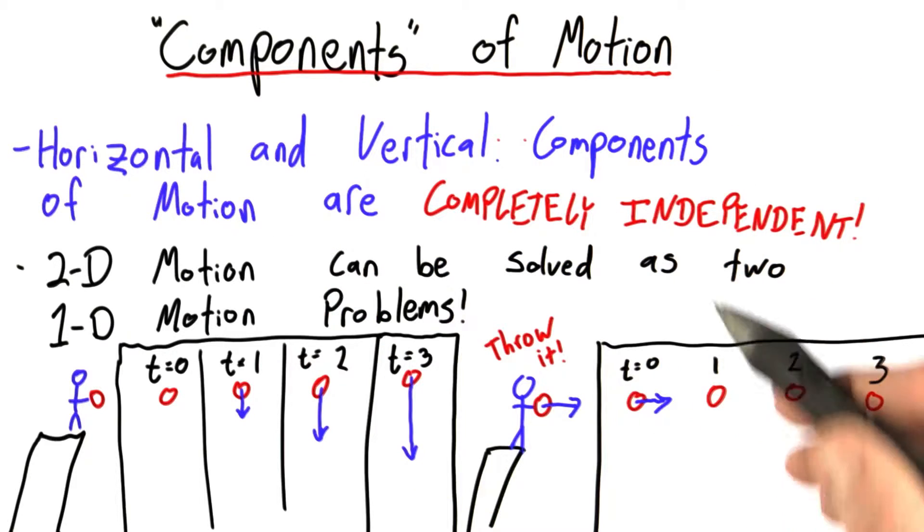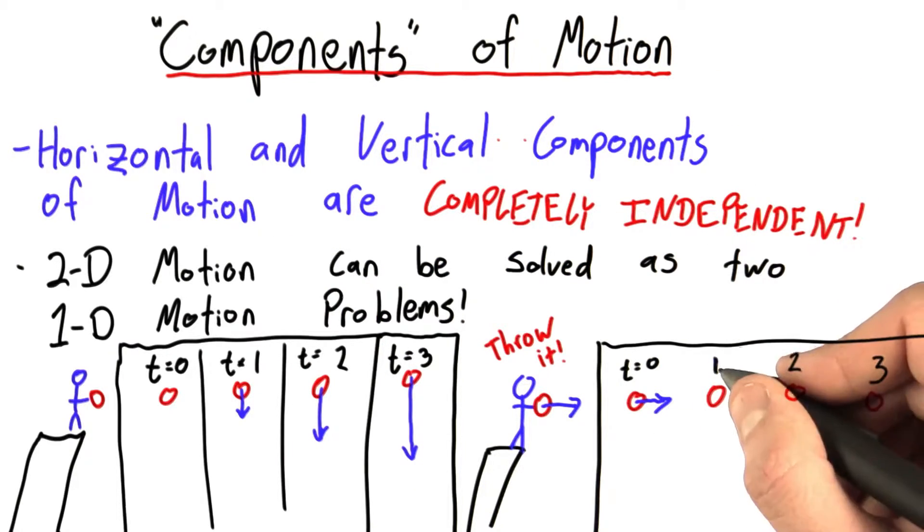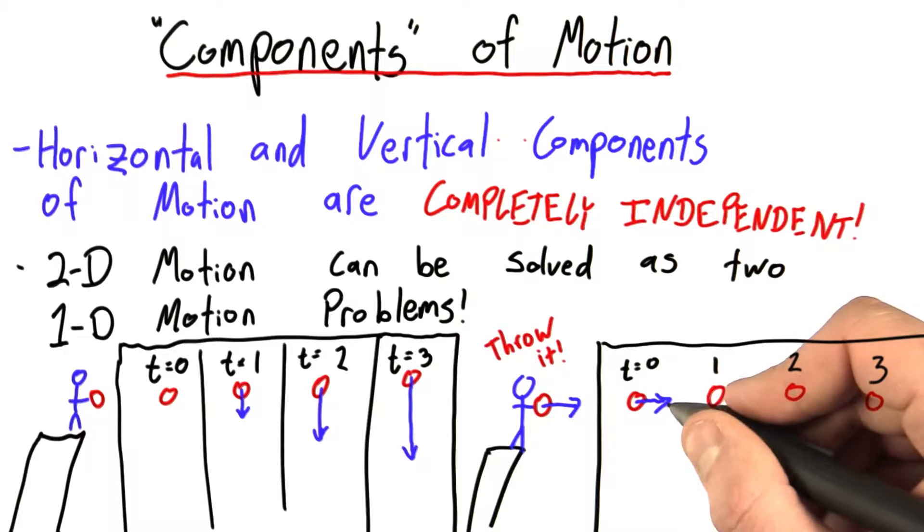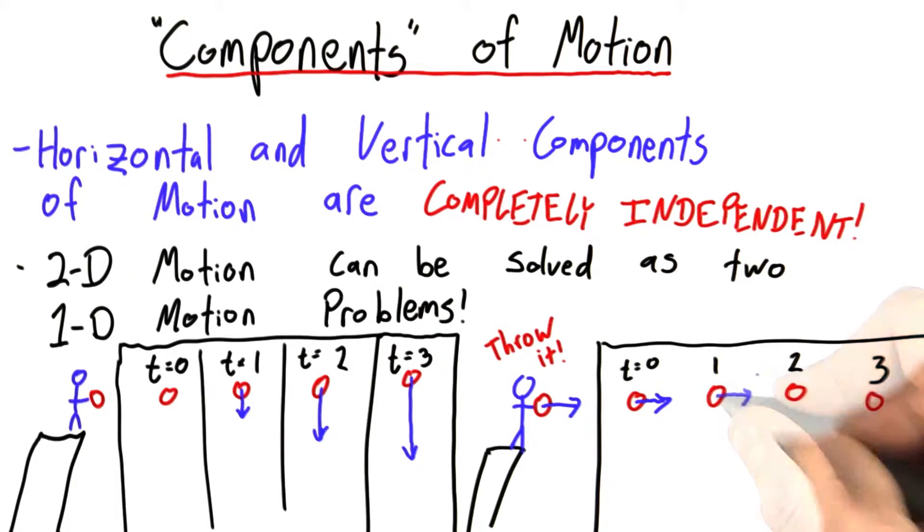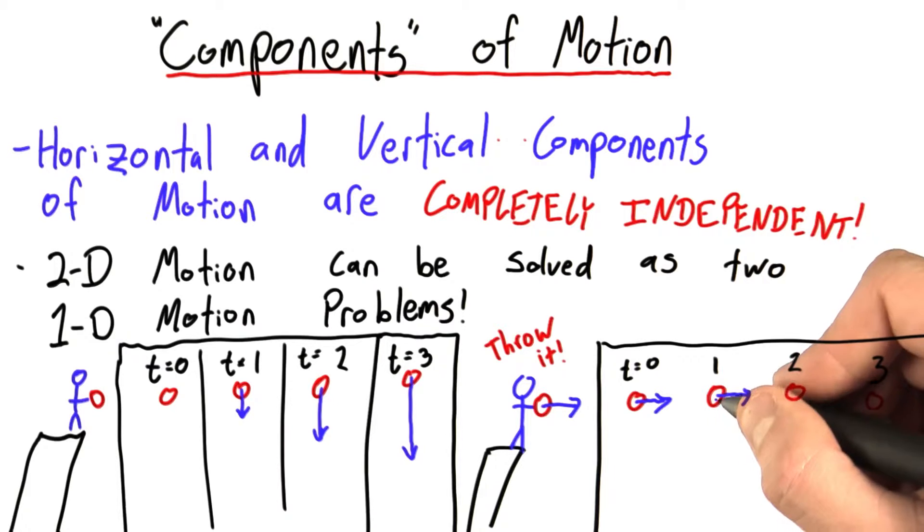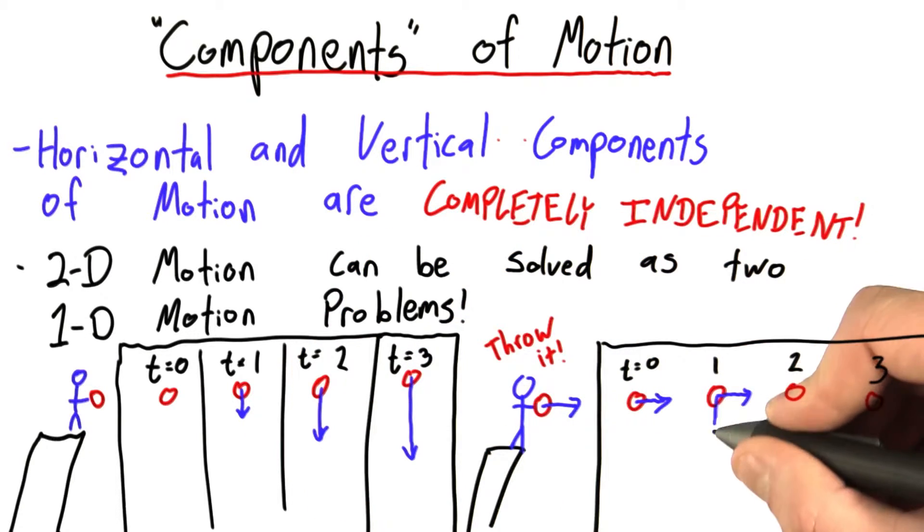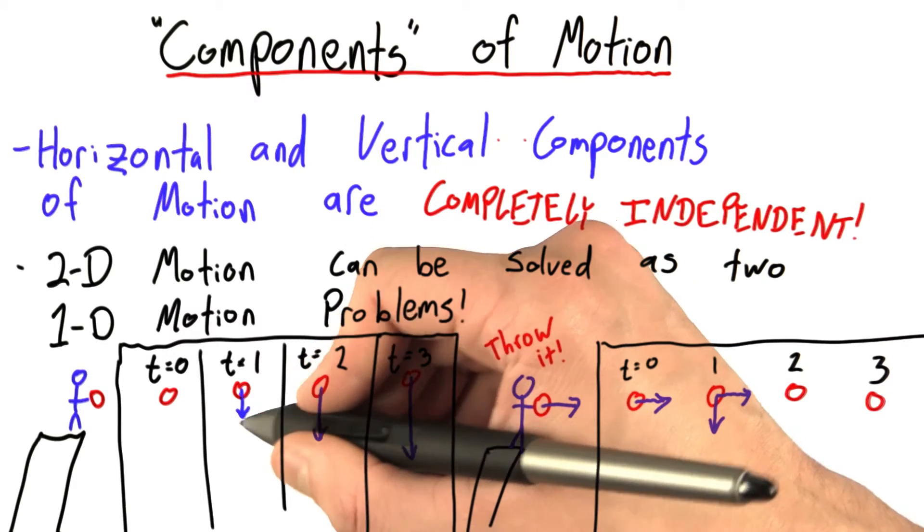I said before that these components are completely independent. So after one second, the horizontal component doesn't change - it keeps going to the right. And just like in the one-dimensional problem before, it picks up some speed going downwards. In fact, it picks up the same amount of vertical speed that it would have had we just dropped the ball.